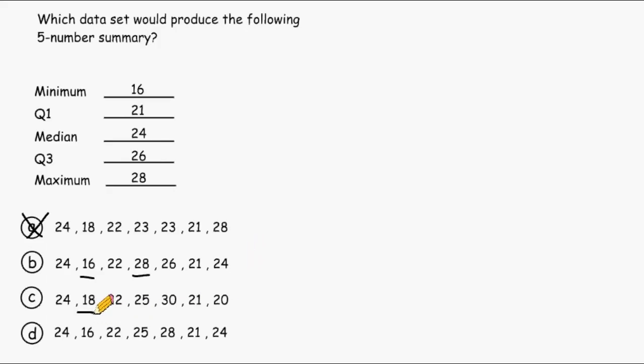For data set C, 18 is the minimum and 30 is the maximum. So we can eliminate choice C as well.